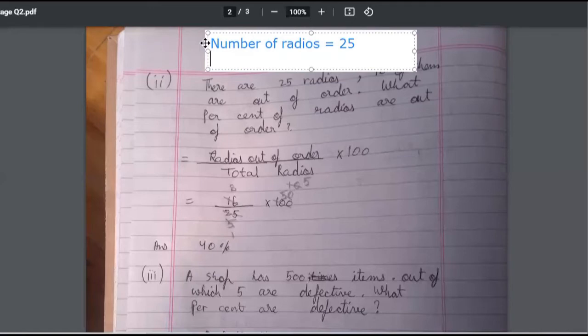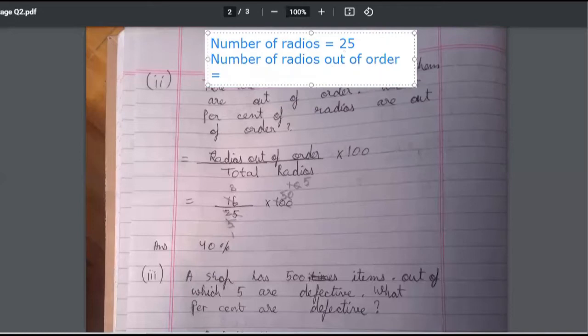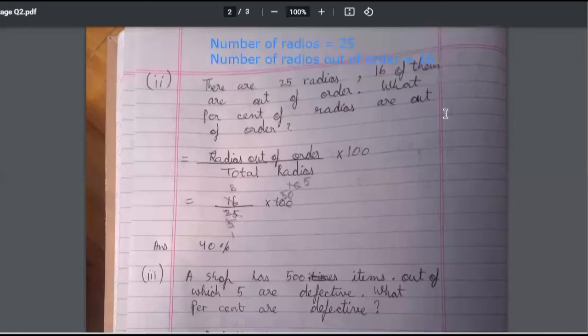Radios out of order. Yeah, number of radios out of order. How many out of order are there? 16, 16, 16. Yeah, so these two statements are important. Now moving ahead.